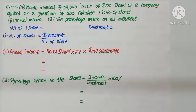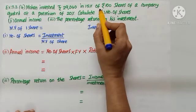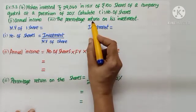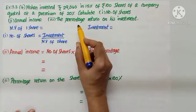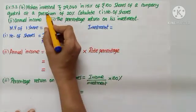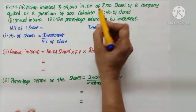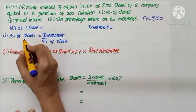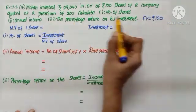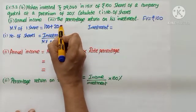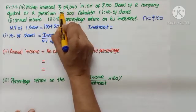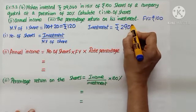Exercise 7.2, Question No. 4. Mohan invested Rs. 29,040 in 15% of Rs. 100 shares of a company quoted at a premium of 20%. Calculate: number of shares, annual income, and the percentage return on his investment. Rs. 100 shares tell me face value equals Rs. 100. Quoted at premium tells us to add: 100 plus 20 gives us market value Rs. 120. Investment — the total amount Mohan invested — is Rs. 29,040.